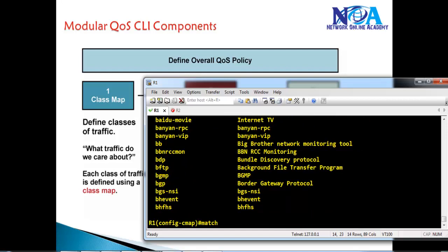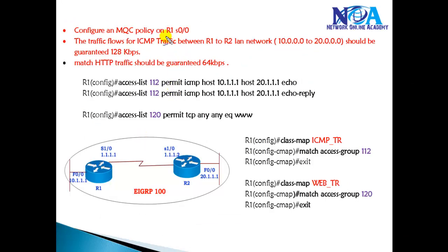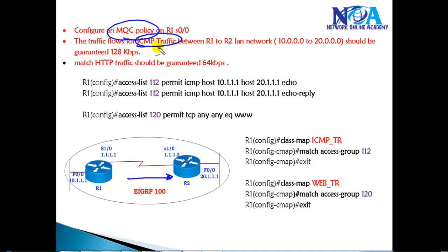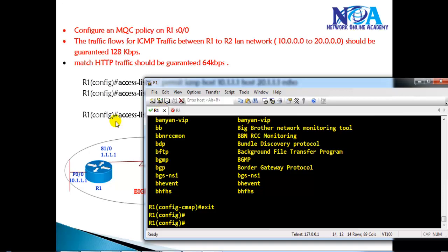The class map differentiates the traffic by defining a set of match commands. Let's look at a small lab scenario. We are going to define a policy on Router 1 going towards Router 2. We will match all ICMP traffic going between Router 1's LAN (10.x network) and Router 2's LAN (20.x network). We are going to guarantee a specific minimum bandwidth of 128 kbps for that traffic in case of congestion.